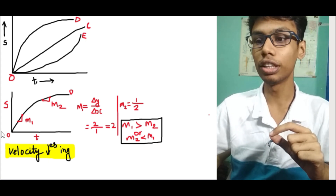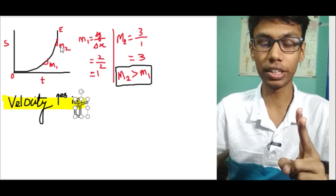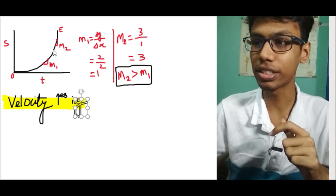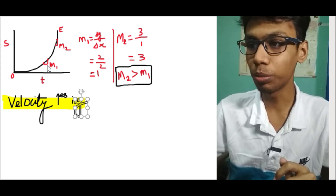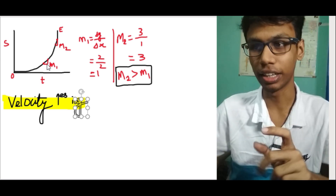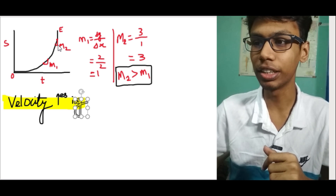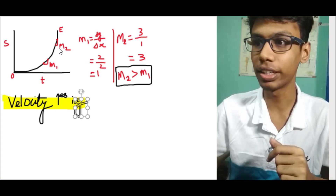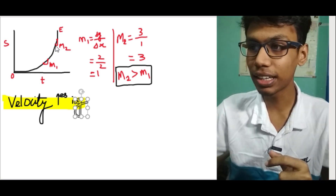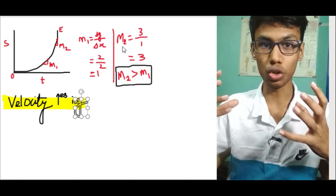Now we look at the OE curve. The OE curve is just the opposite of OD. In the OE curve, we look at two points and calculate the slope as delta-Y by delta-X. At one point the horizontal and vertical lines are almost equal — two units each — so the slope is 1. But at another point the change in y-axis is 3 and the change in x-axis is 1, so the slope is 3.